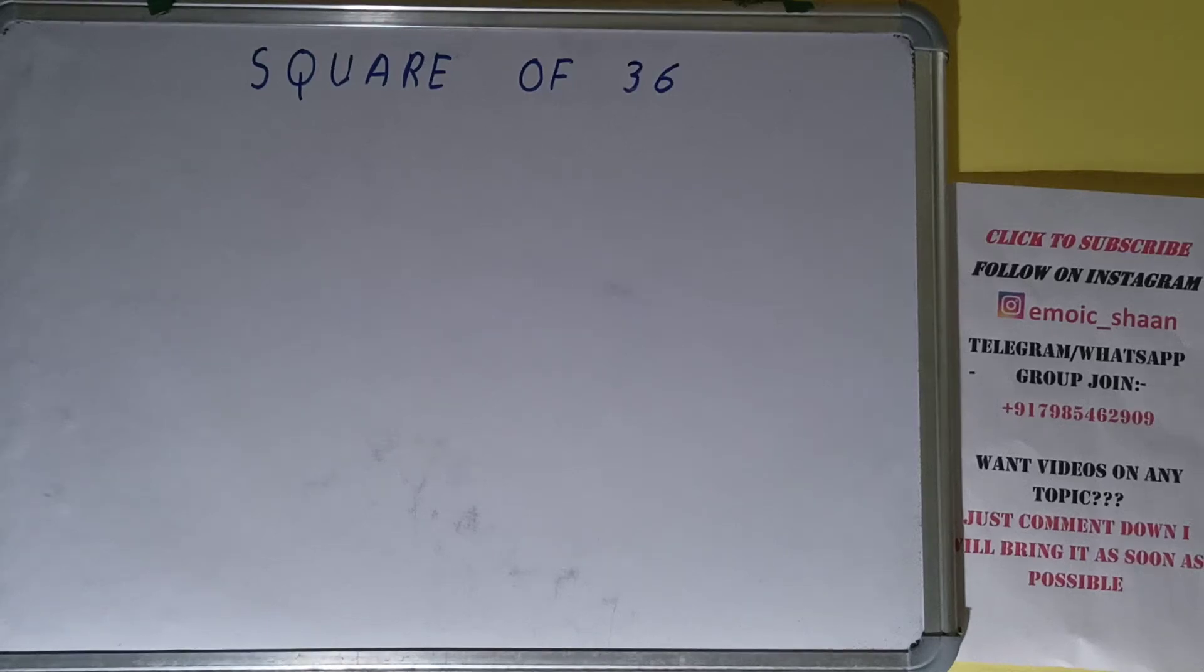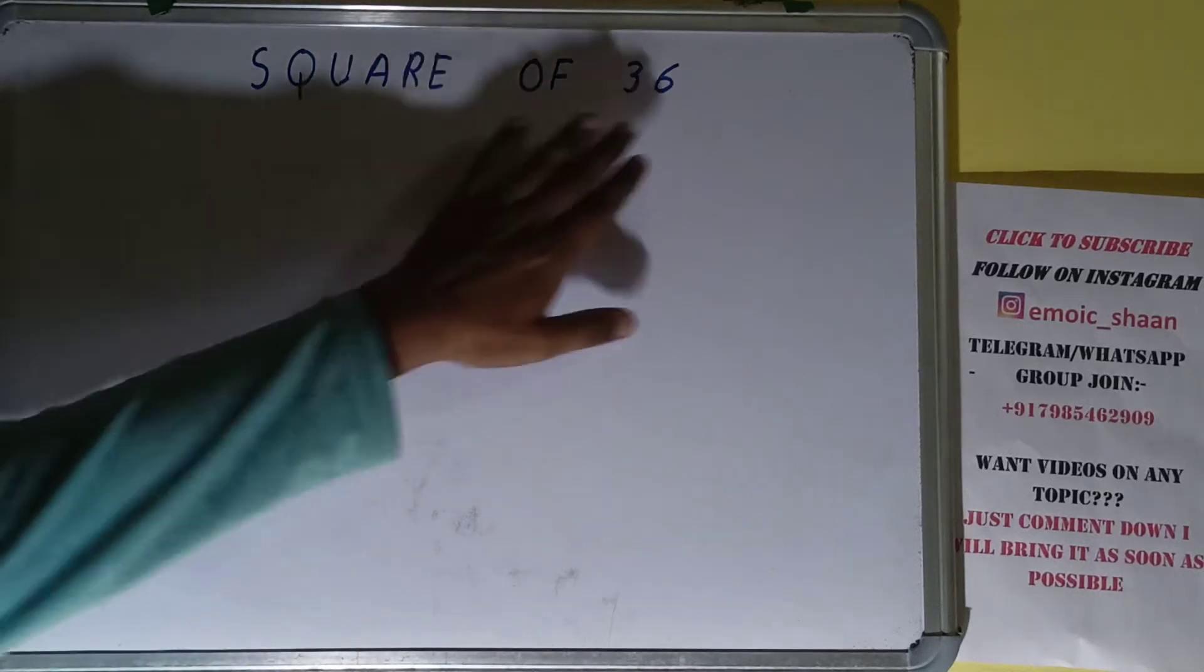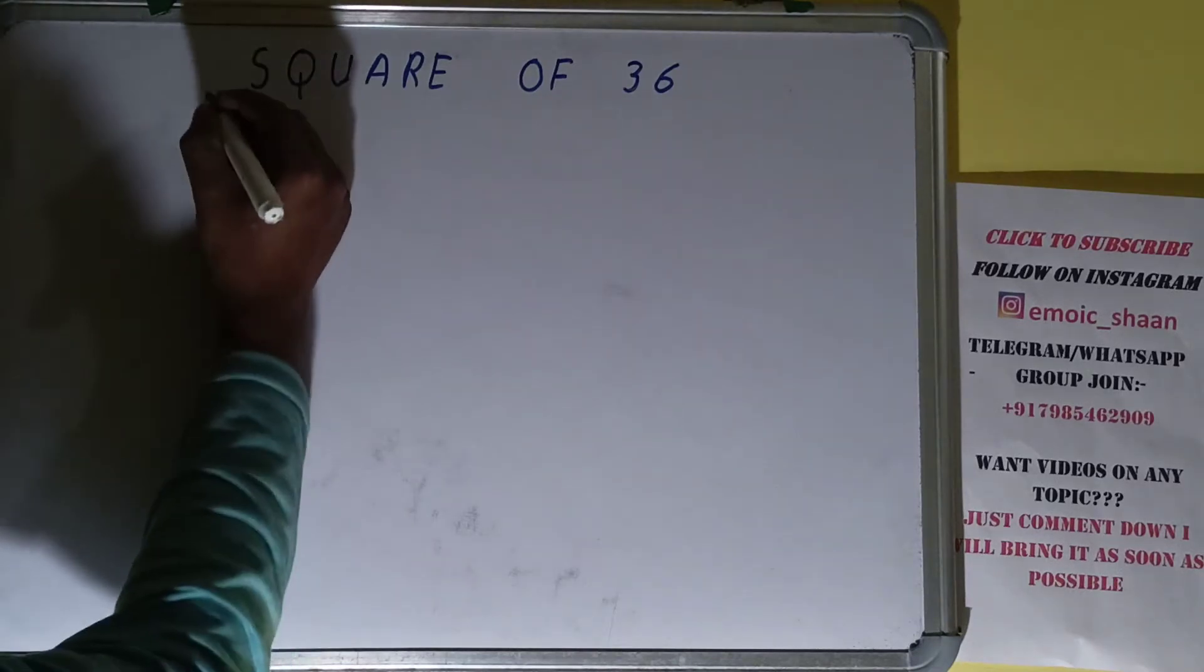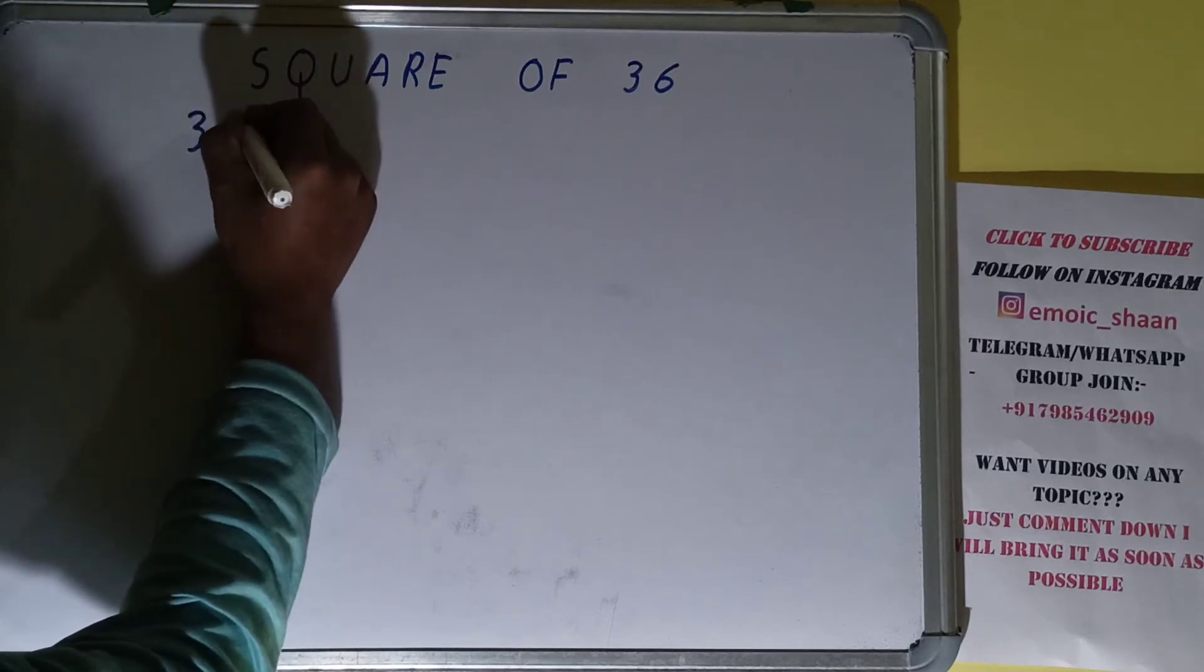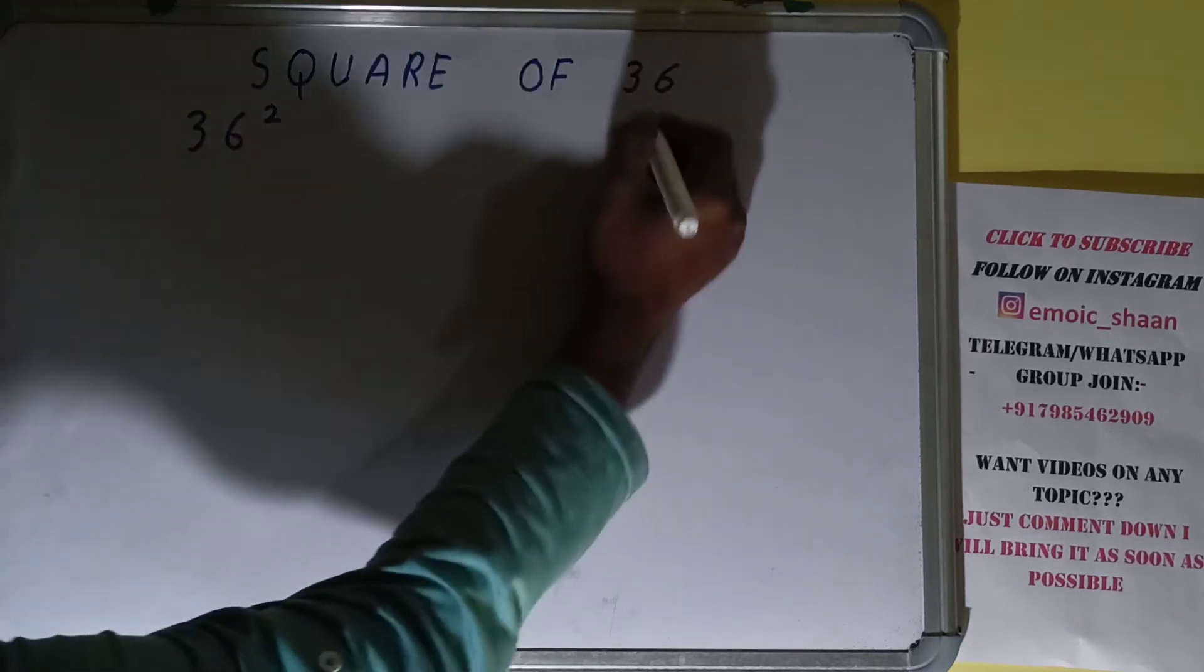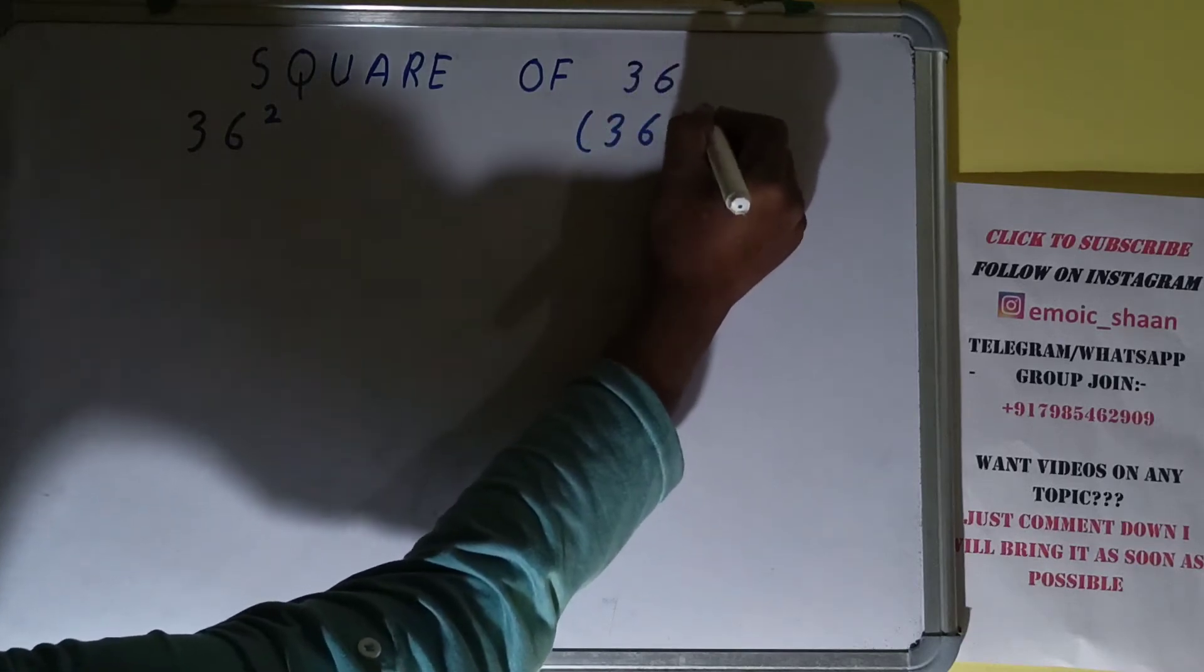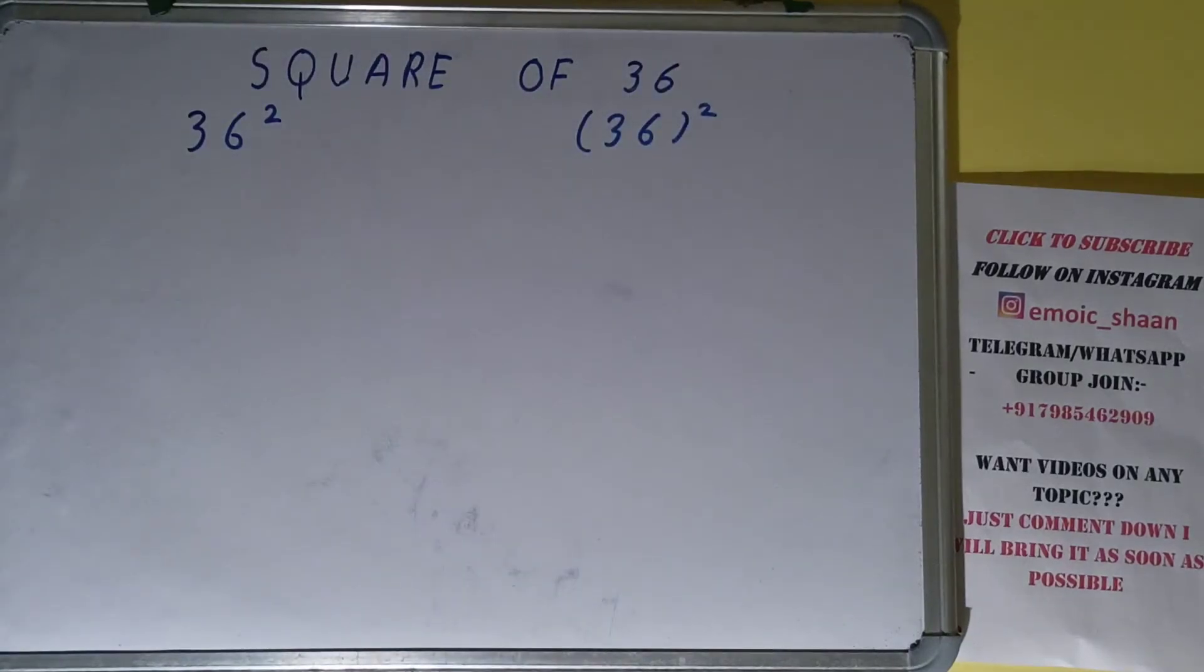Hello friends, and in this video I'll be helping with the square of the number 36, so let's start. Before finding it, let me tell you that square of 36 can also be written as 36 raised to power 2, or inside bracket 36 outside 2. These all have one and the same meaning, that is you need to find out the square of the number 36.